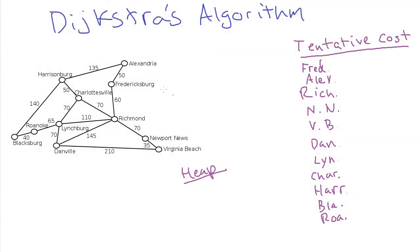The way that Dijkstra's algorithm works is you have a starting city that has to be chosen in advance, and then it calculates the distance from that starting city to every other city in the graph. Let's choose Fredericksburg as our starting city. The reason we find the distance between Fredericksburg and every other city is because to know how long it takes to get to Roanoke, we need to know how long it takes to get to Blacksburg and Lynchburg first.